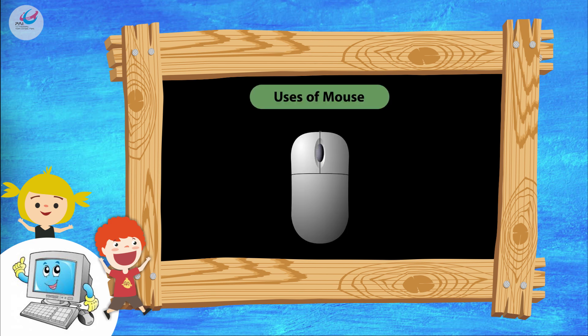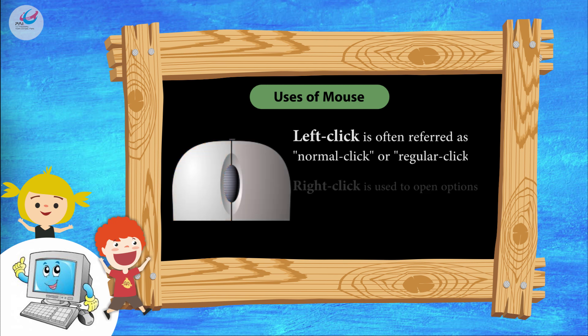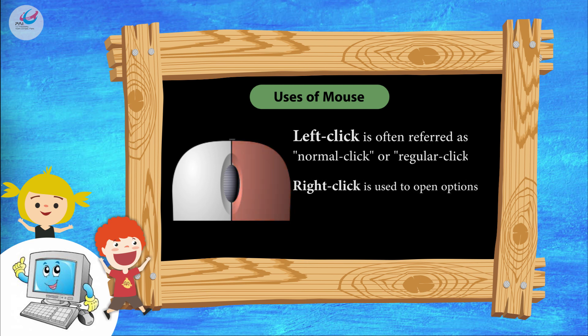Let's see the uses of mouse. Left click is often referred to as normal click or regular click. Right click is used to open options. Scroll button is used to scroll page up or down.